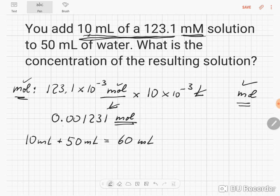We still have the same amount of moles now in these 60 milliliters. So in order to calculate our concentration, we need to calculate mole per liter. We have 0.001231 mole